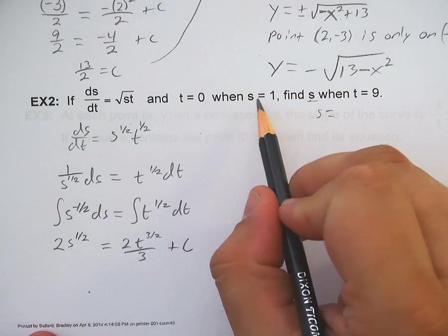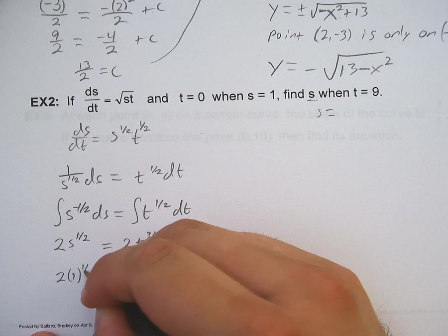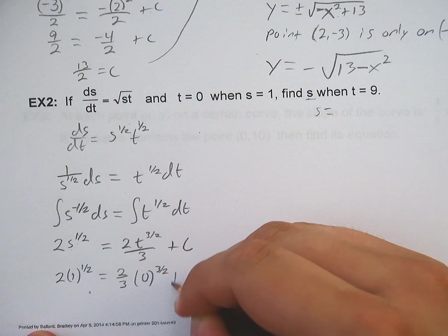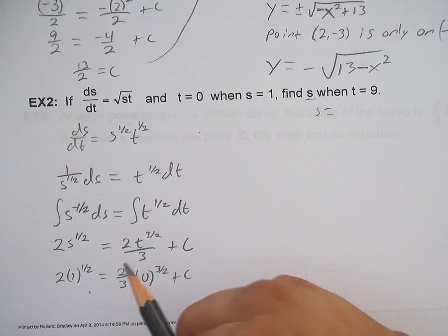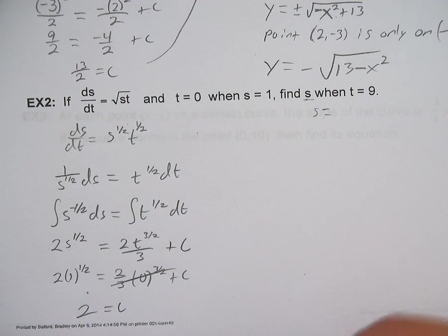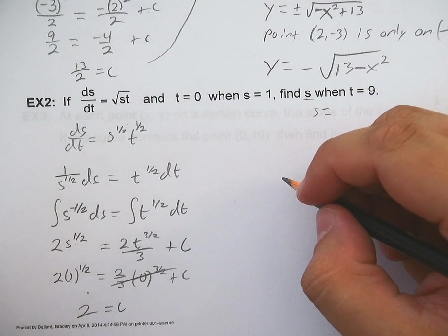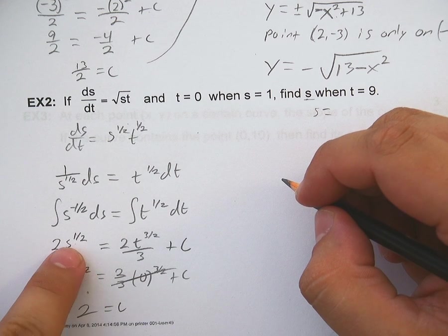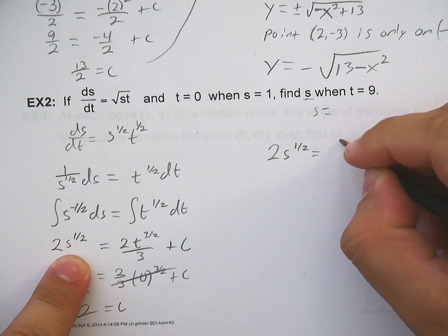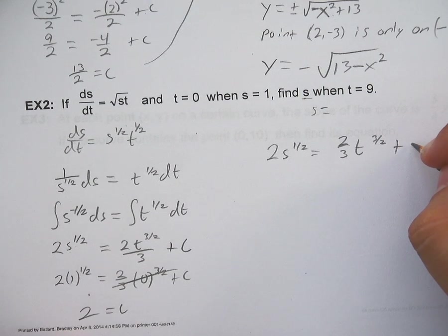Plug in the original. S is 1, T is 0. So 2 times 1^(1/2) equals 2/3 times 0^(3/2) plus c. Square root of 1 is 1. So c is 2. This is all 0. So back up here, we have 2s^(1/2) equals 2/3 t^(3/2) plus 2.